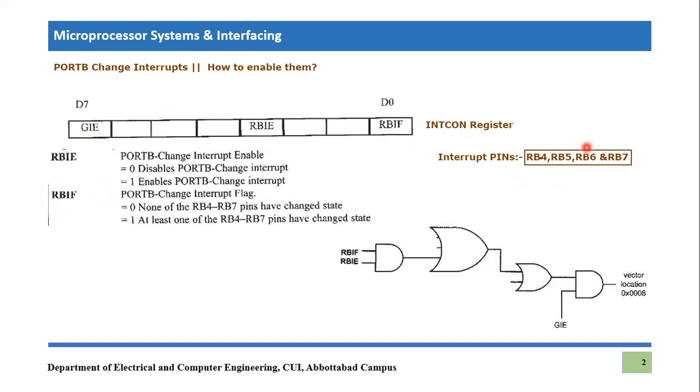But this interrupt will definitely proceed towards microcontroller only if we have enabled it. So how one can enable it? There is a bit RBIE which is Port B change interrupt enable. So you have to enable it to one. This bit is also present in interrupt control register and you have to also enable global interrupt enable.